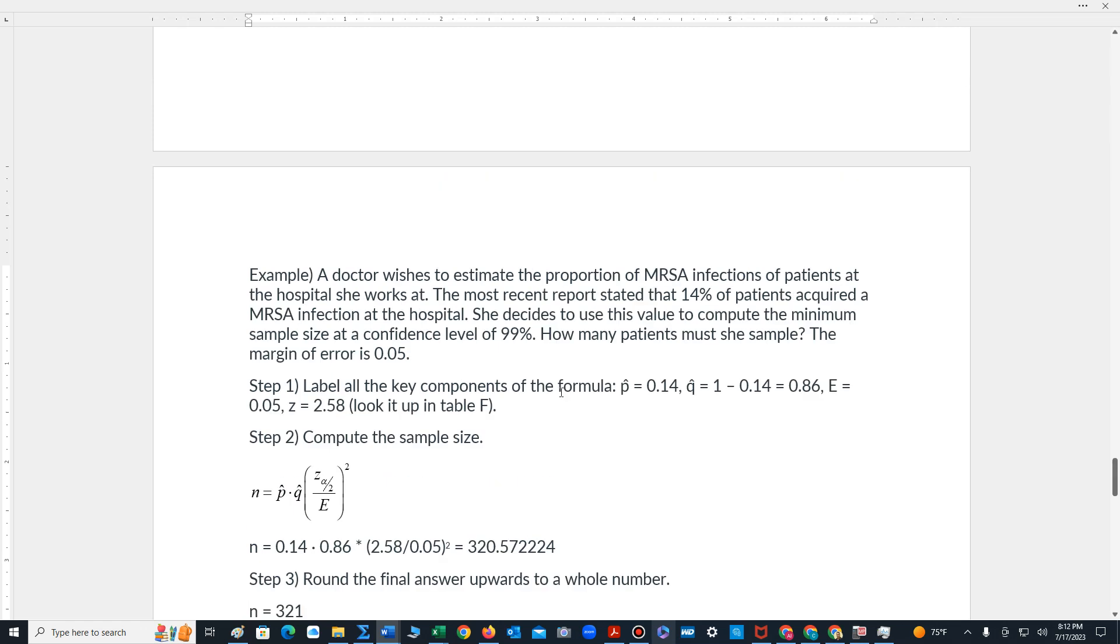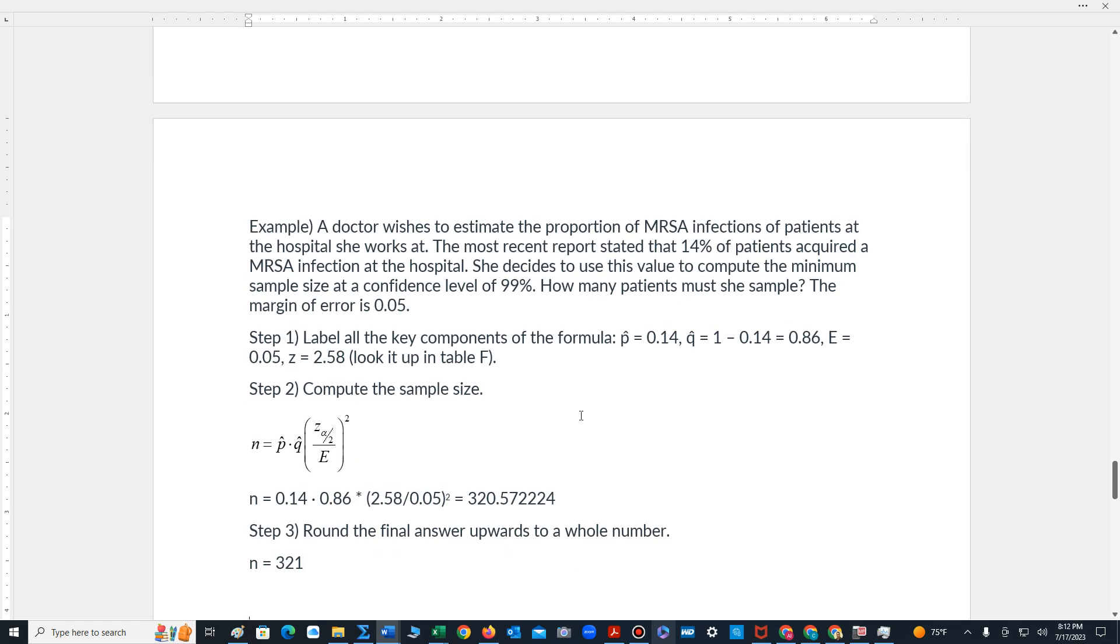So the first problem says the following. A doctor wishes to estimate the proportion of MRSA infections of patients at the hospital she works at. The most recent report stated that 14% of patients acquired a MRSA infection at the hospital. She decides to use this value to compute the minimum sample size at a confidence level of 99%. How many patients must she sample? The margin of error is 0.05.